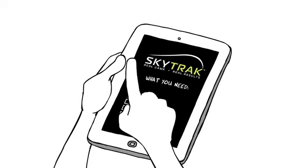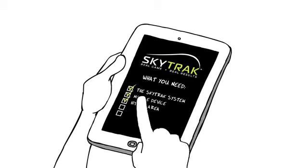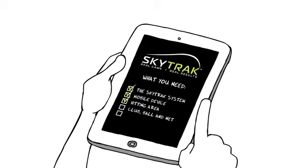Here's what you'll need to get started: the SkyTrack system, a mobile device, a safe hitting area, your club, a ball, and we recommend a net. Lastly, though not required, an internet connection will give you access to additional online features.